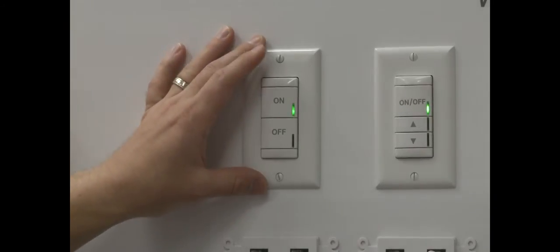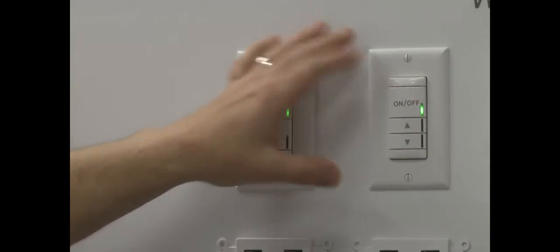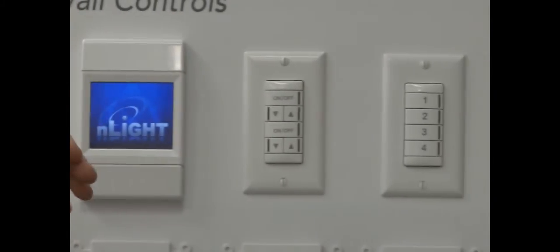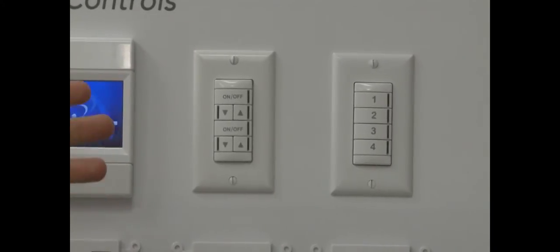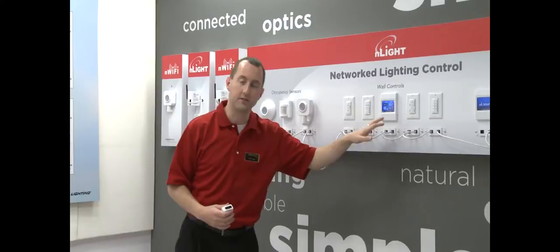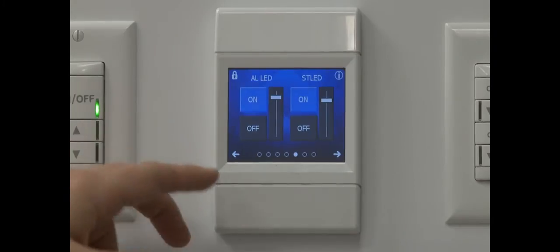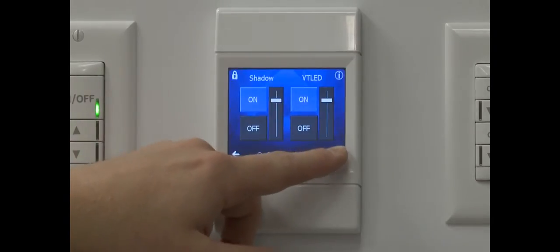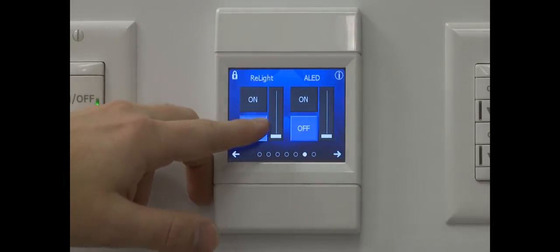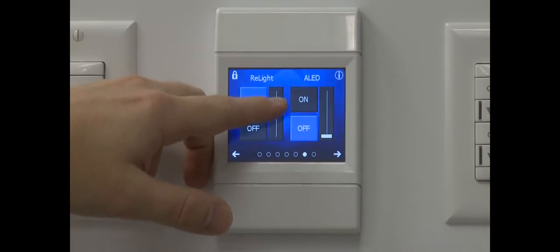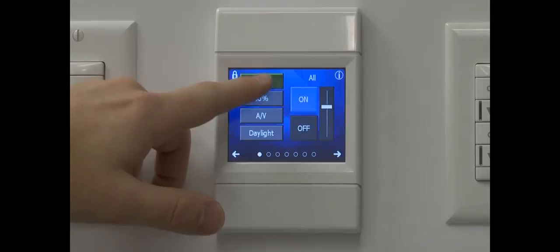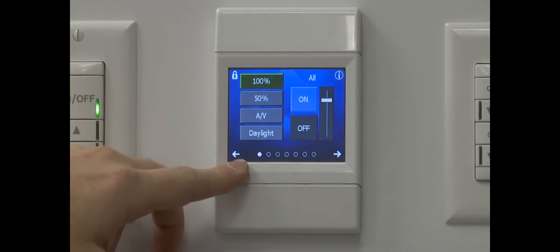Nlight's wall controls are called wall pods. We have push button on-off, on-off with raise lower, dual on-off with dual raise lower, single, two, four, and eight scene controllers. There's also a graphic station that allows you to control things from a touch screen. The graphic wall pod allows you to scroll between many pages of controls, turn them on and off, raise and lower the dim level, or run scenes directly from this with the scene control.